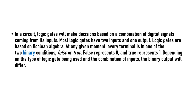Most logic gates have two inputs and one output, though some gates have three or more. Logic gates are based on boolean algebra. At any given moment, every terminal is in one of two binary conditions: false or true. False represents zero and true represents one. Depending on the type of logic gate being used and the combination of inputs, the binary output will differ — it may be one or it may be zero, depending on the inputs.